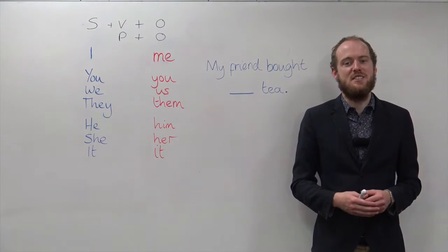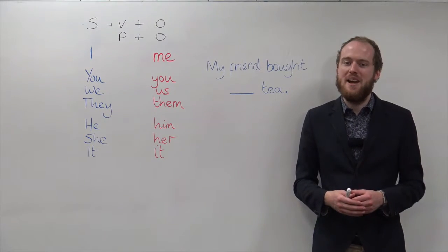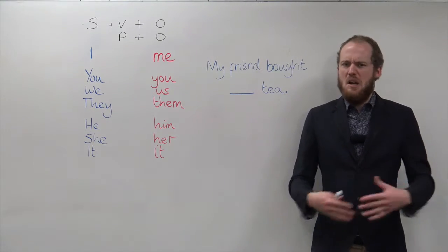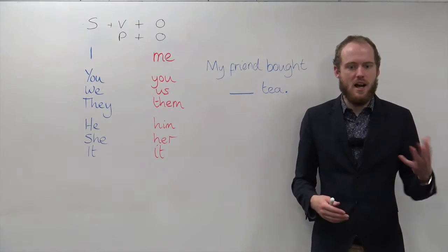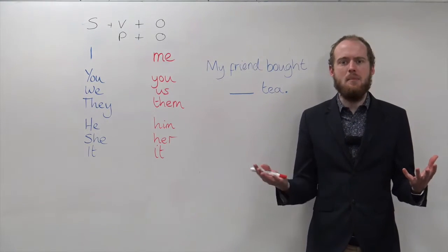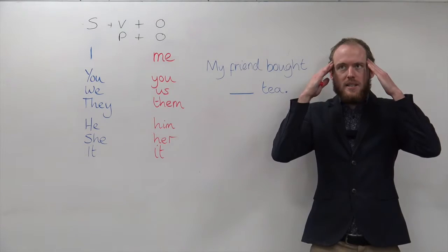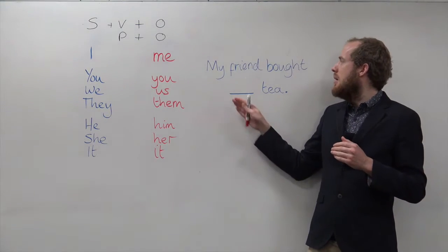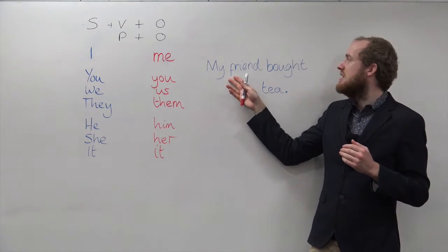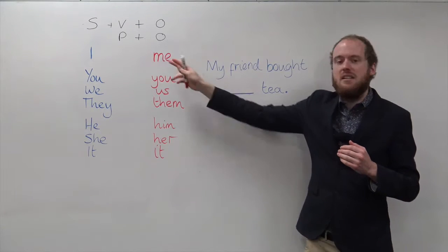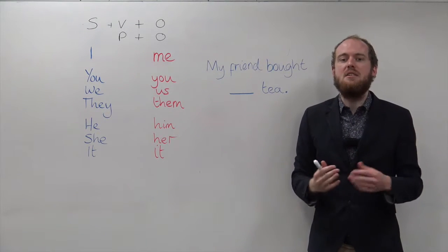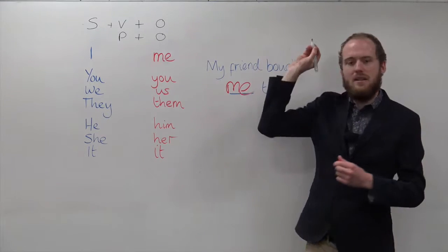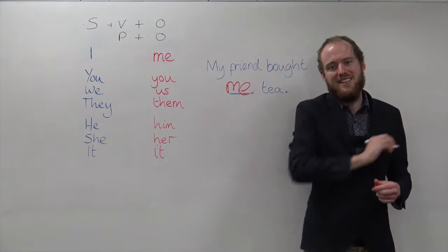Look at this sentence: 'My friend bought ___ tea.' What should we put here — is it 'I' or is it 'me'? Do we need the subject or the object? My friend is the subject, so we need the object: 'My friend bought me tea.'